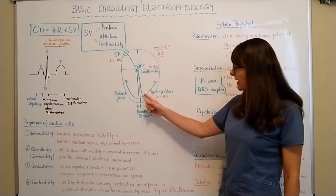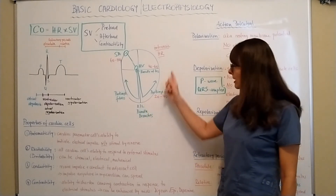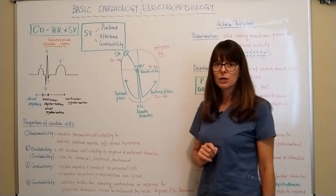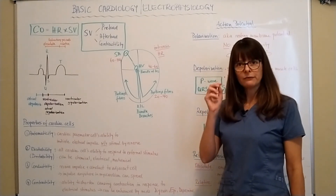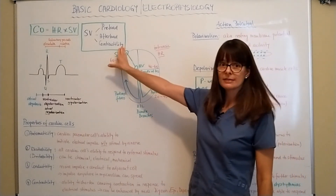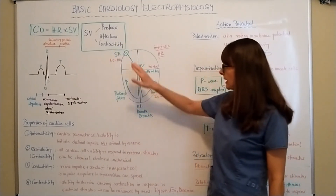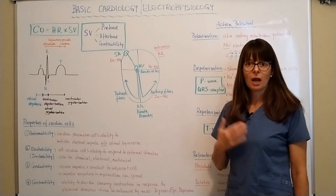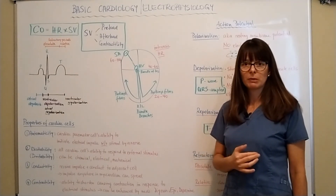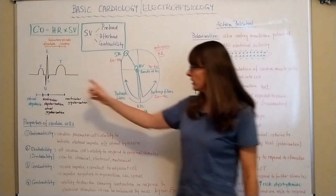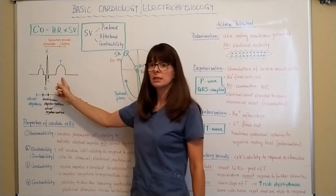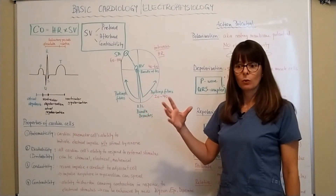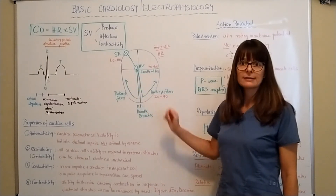The SA node conducts at 60 to 100 beats per minute, which is the normal adult heart rate. The AV node and bundle of His have an intrinsic rate of 40 to 60, and the Purkinje fibers have an intrinsic rate of 20 to 40. When we see a patient with a heart rate in the 50s, we have to consider whether the SA node has failed and the AV node has taken over. We then look at the underlying rhythm — the P, QRS, and T waves — to determine where the breakdown in the conduction system has occurred.